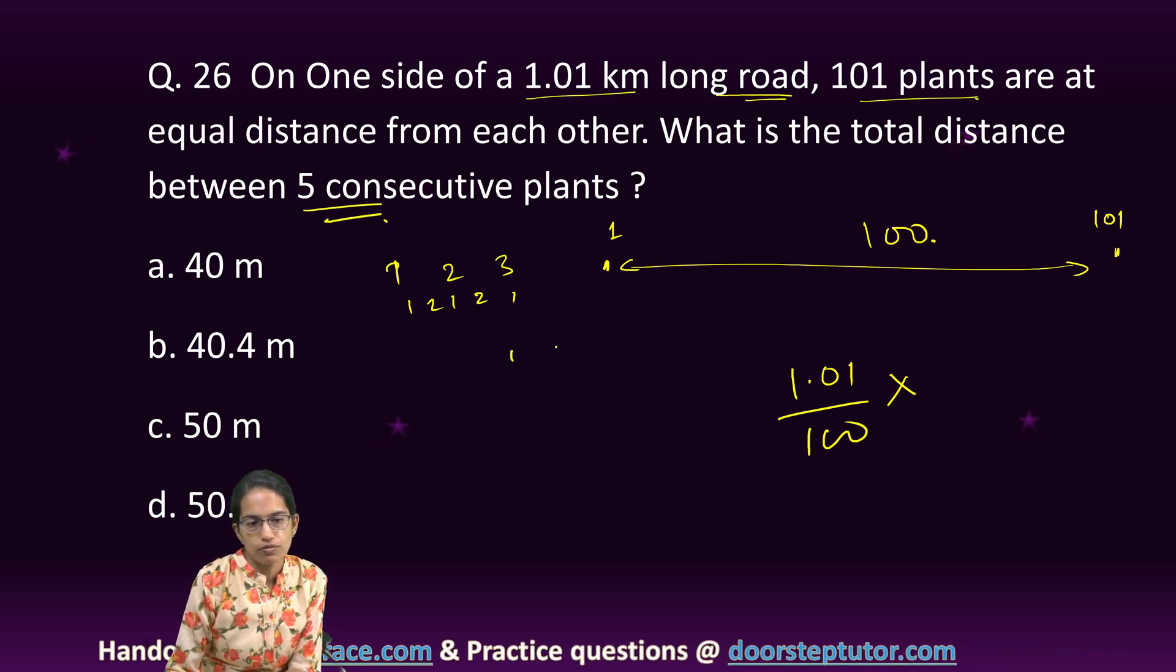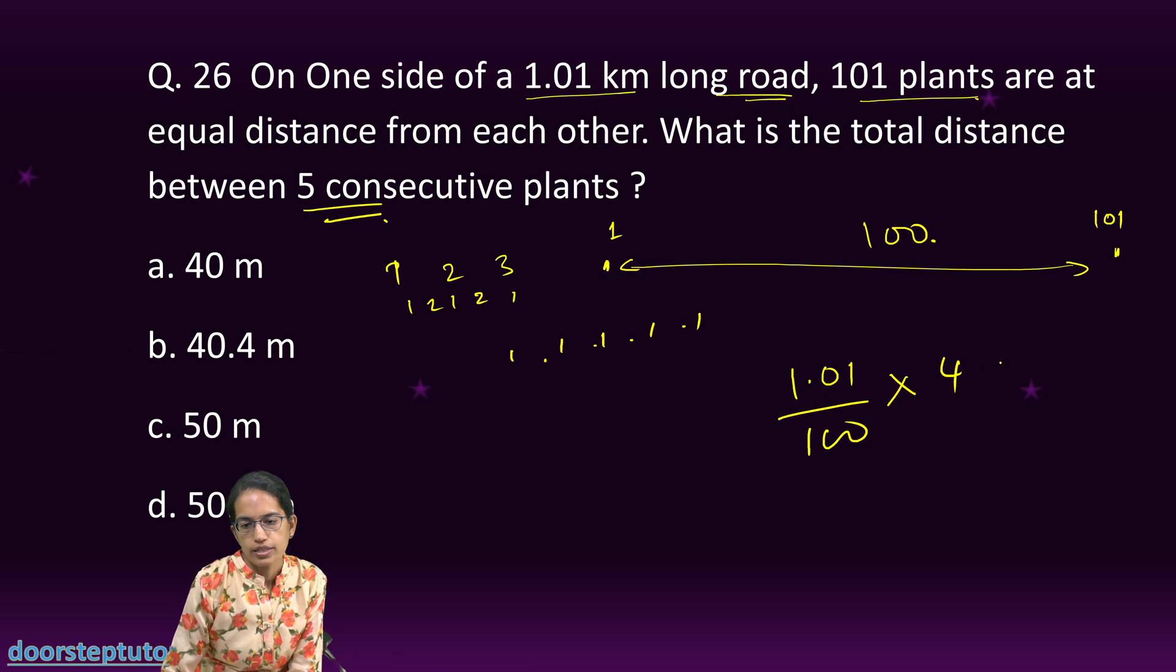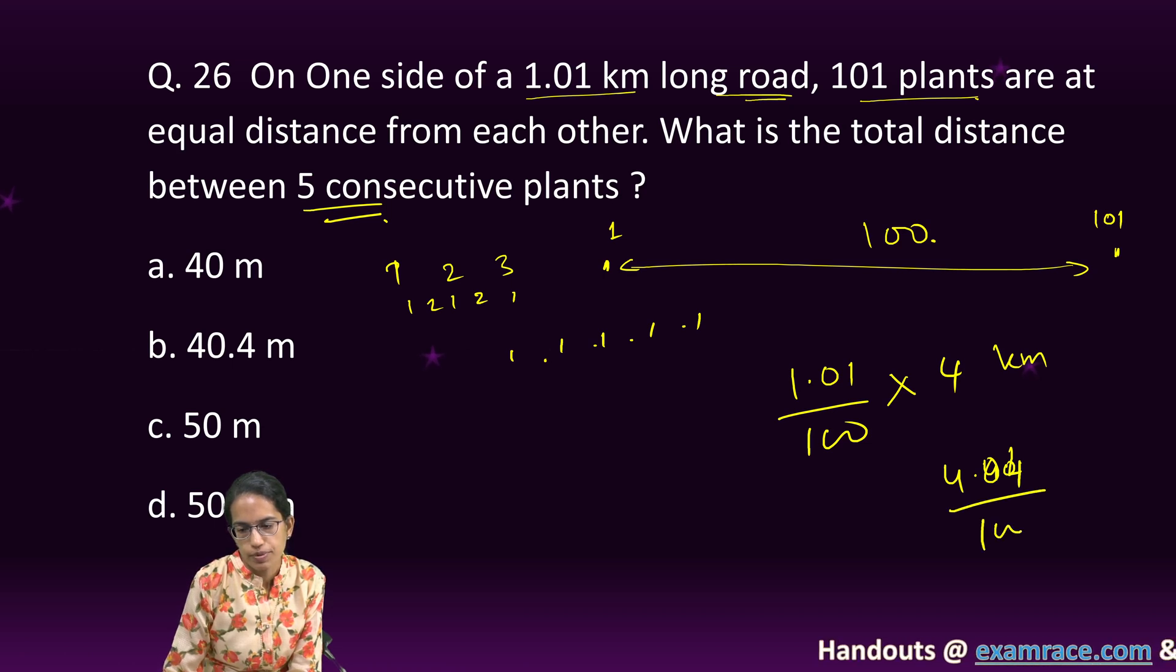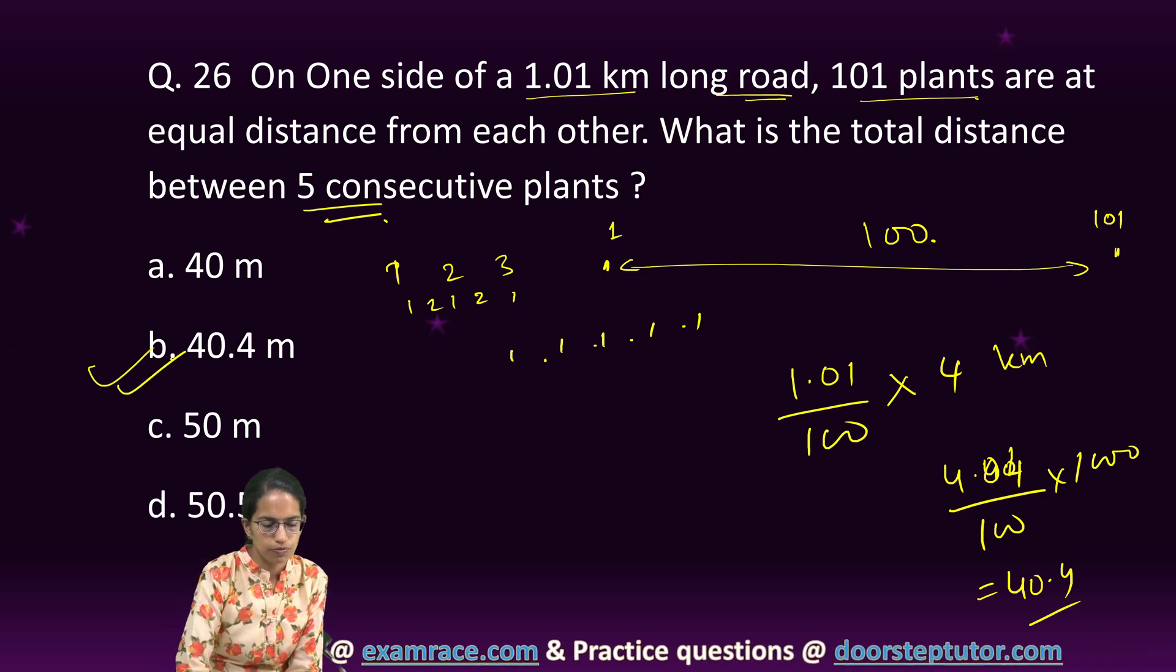So, 1.01 divided by 100 into between five consecutive plants, right? Five consecutive plants, one, two, three, four and five. So, how many gaps? Four. So, into four. Now, this is in kilometers. So, it is 4.04 divided by 100 into 1000. That is 40.4. So, correct answer is 40.4 here.